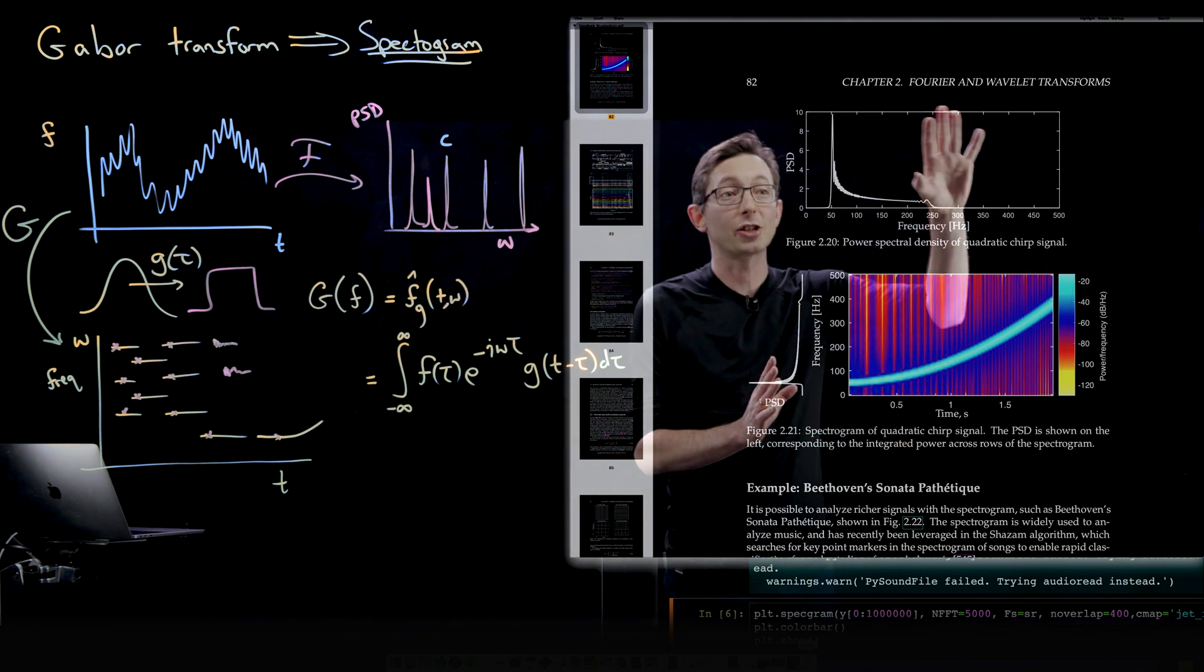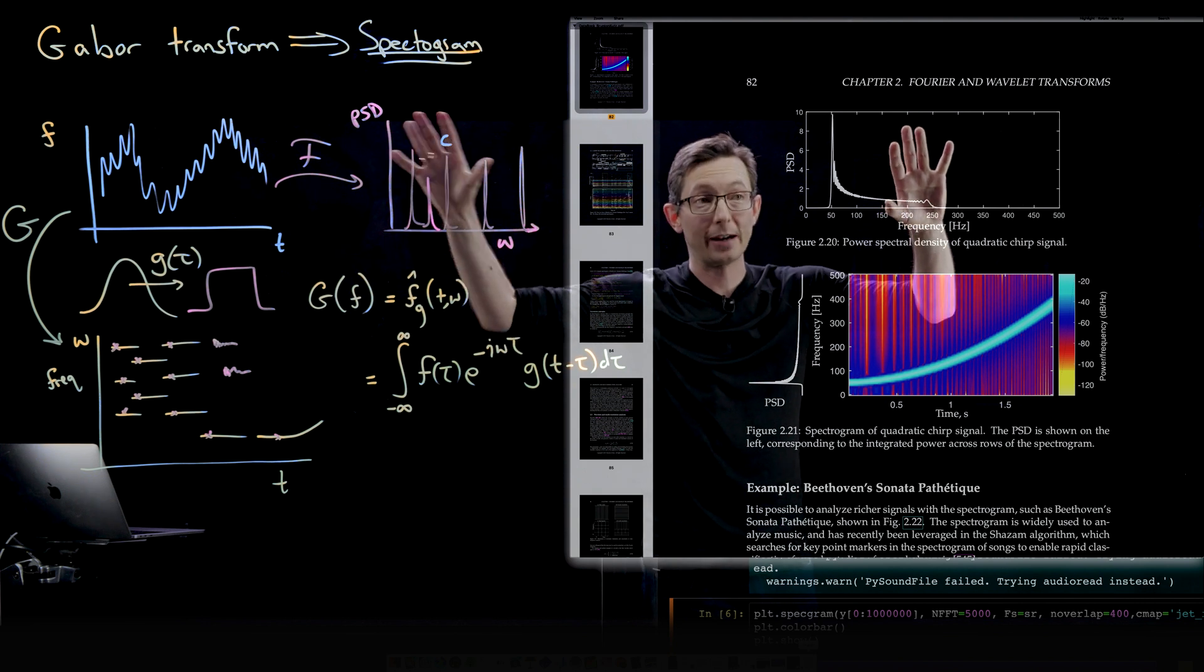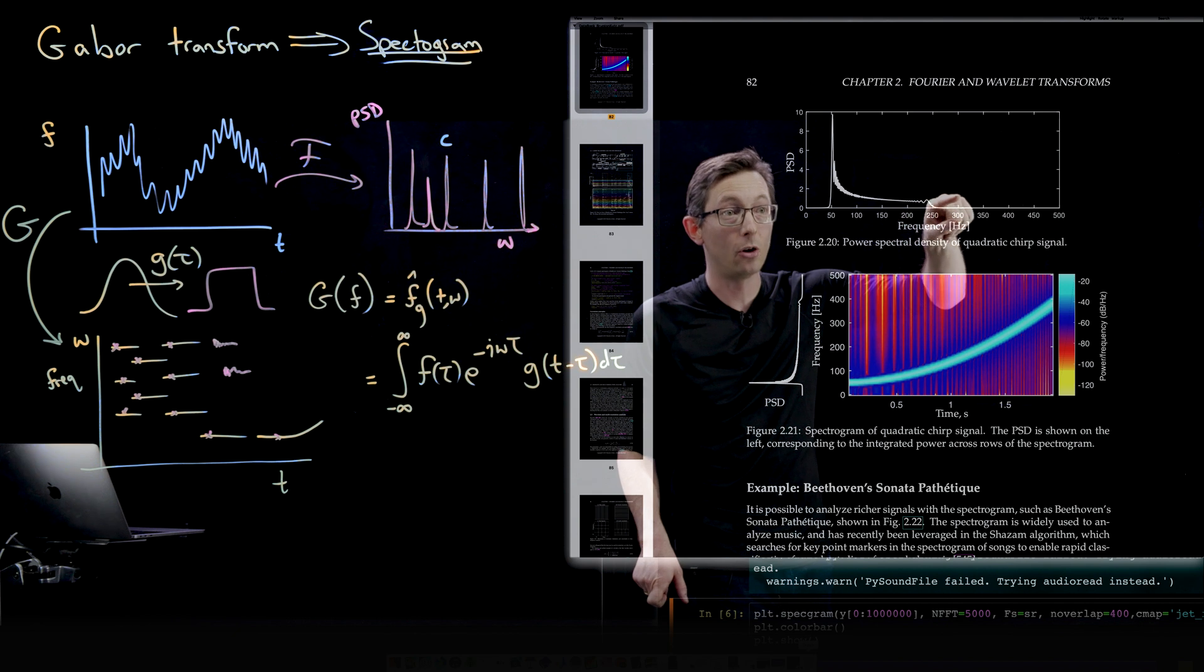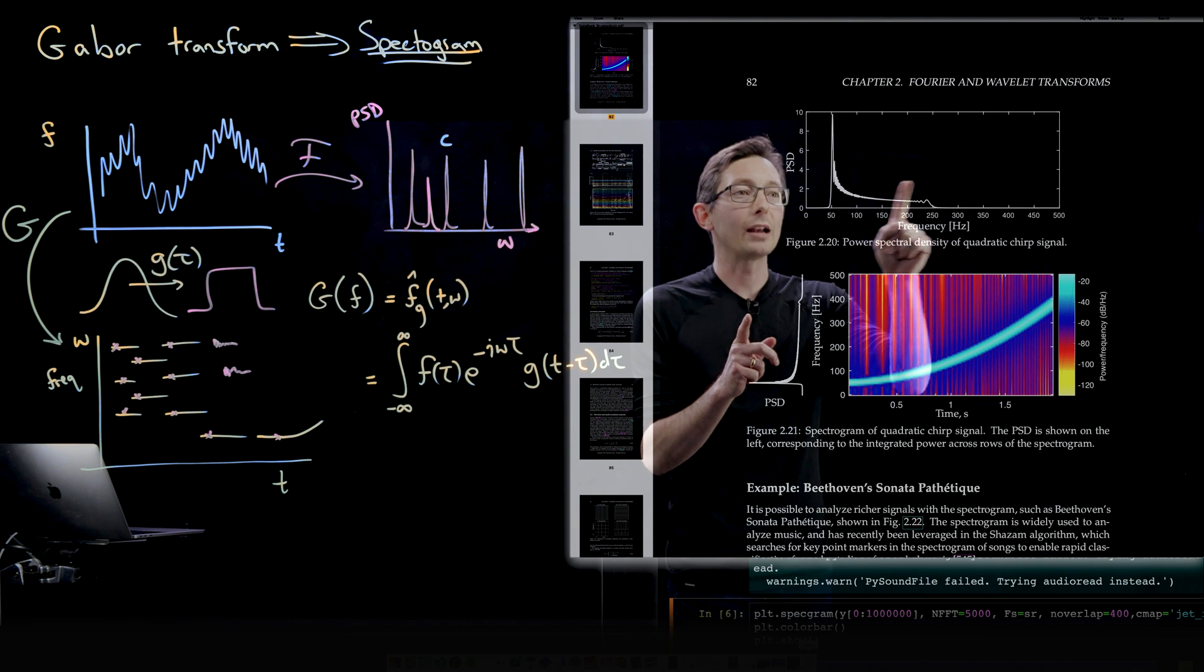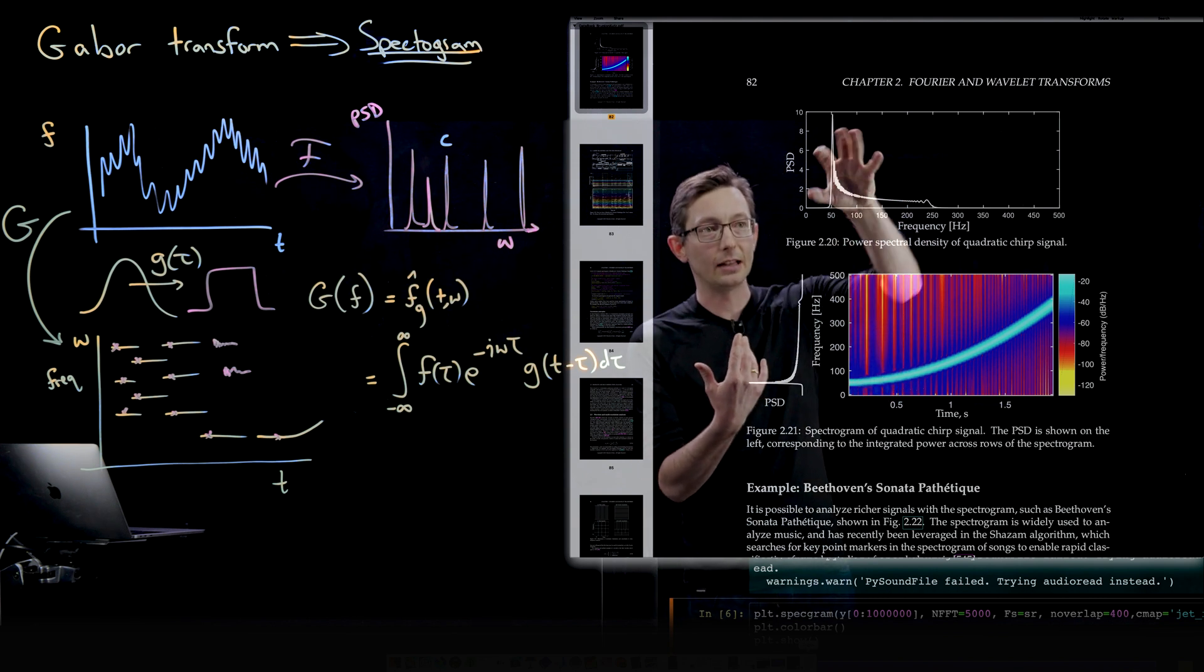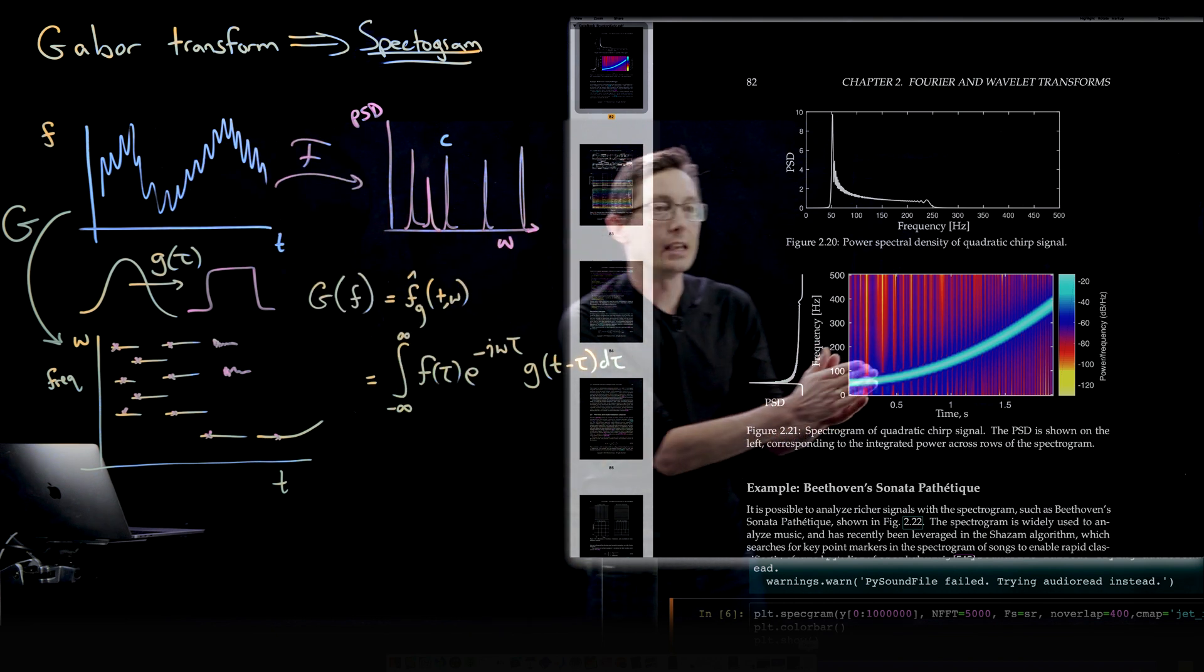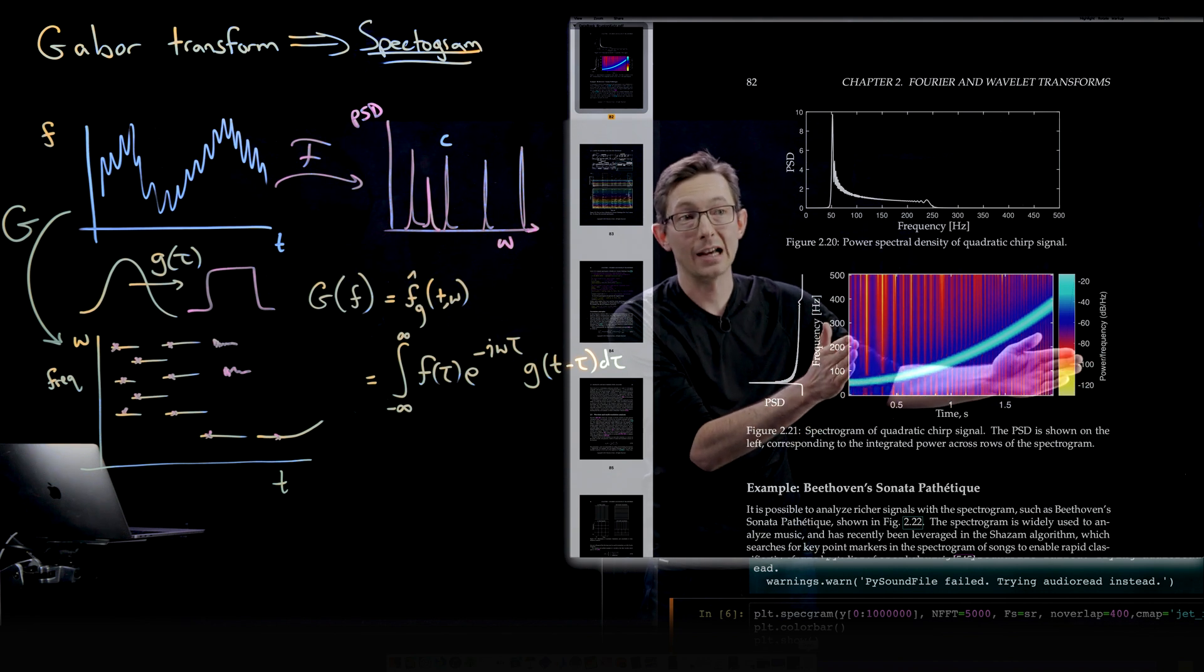So this is the chirp example I just showed you. If you did not compute this time frequency diagram, but instead you computed the actual full Fourier transform of the whole audio signal all at once, and computed the power spectrum, this is what you would get. So here you see that there is a lot of power at 50 Hertz, and then there's a lot of power in all of this band from 50 to 250. But it doesn't tell you where in time these frequencies occur. And so I think it's kind of fun to take this and knock it over on its side down here.